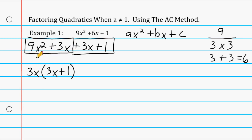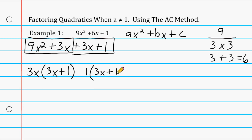For the second part, 3x and 1 have no common factor other than 1, and neither term has an x in common. So we pull out a 1, writing 1(3x + 1). Notice the expression inside the parentheses is the same as in the first part — that's our check that we factored correctly.